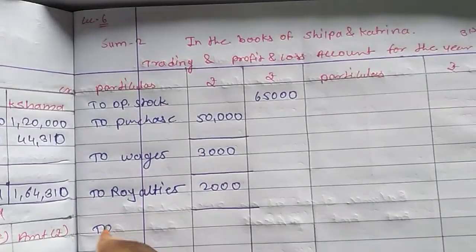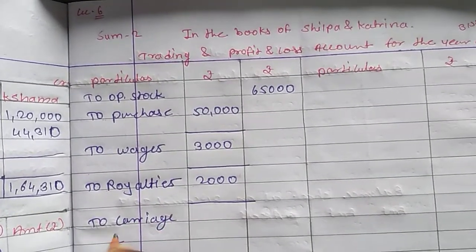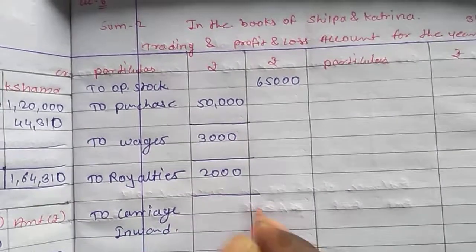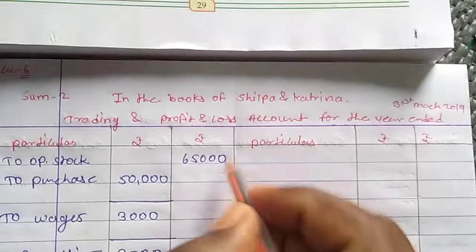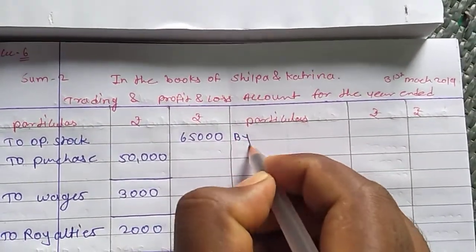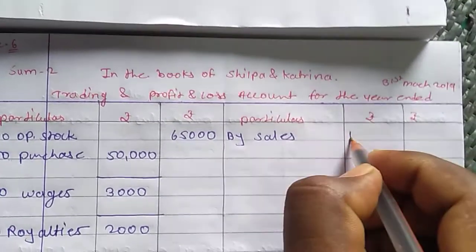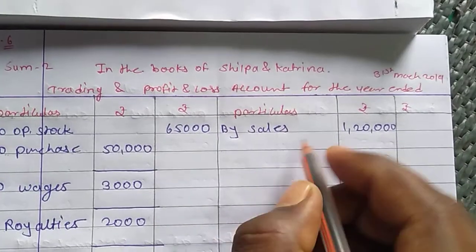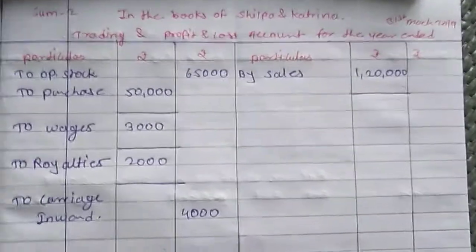Then next: carriage inward — Rs. 4,000. Then sales — how much? Given as Rs. 1,20,000. Then all the trading account entries are done.